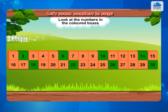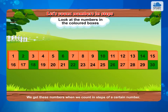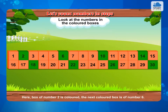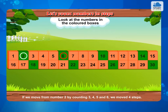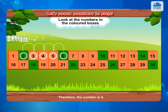Now look at the numbers in the colored boxes given below. We get these numbers when we count in steps of a certain number. Which is that number? Here, the box of number 2 is colored. The next colored box is of number 6. If we move from number 2 by counting 3, 4, 5 and 6, we moved 4 steps. Therefore, the step number is 4.